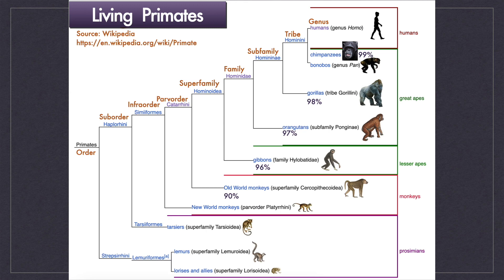Chimpanzees are our closest relatives, who have 99% DNA similarity with us. Gorillas, orangutans, and gibbons have 98%, 97%, and 96% DNA similarity with us respectively. Old world monkeys have about 90% DNA similarity with us. New world monkeys and the prosimians — tarsiers, lemurs, and lorises — have less than 90% similarity with us.